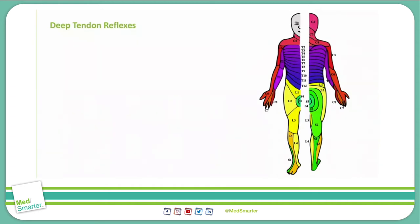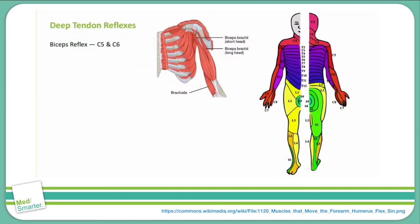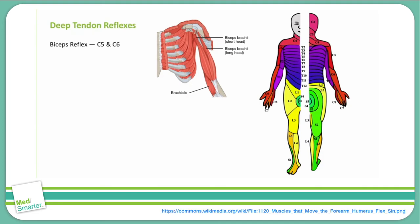Just like dermatomes, deep tendon reflexes correspond with particular spinal nerves — the afferent and efferent nerves travel through the posterior and anterior horn at that level. There are six main reflexes to localize for Step 1. The first is the biceps reflex, corresponding to spinal nerves C5 and C6. Striking the biceps tendon causes the biceps to contract and the arm to flex. If the biceps reflex is abnormal and all others are normal, there may be a problem in the reflex arc at the C5-C6 level.